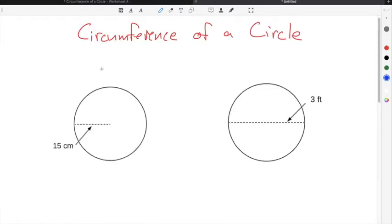When finding circumference of a circle, there are typically two formulas that you have to use based off of the information that's been given to you in a problem.